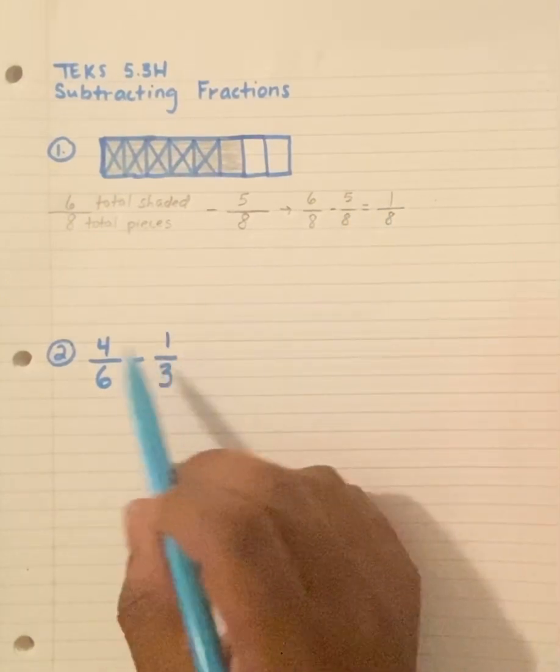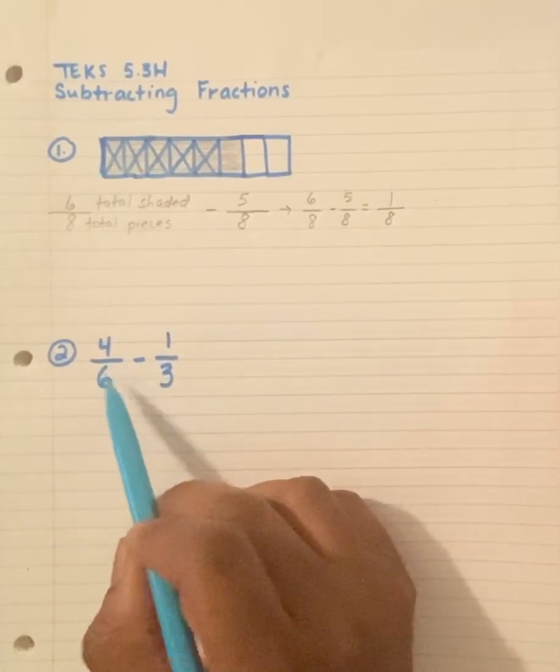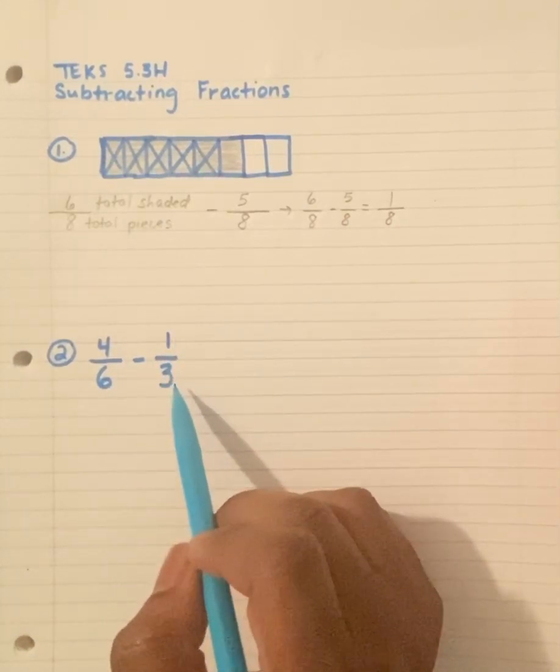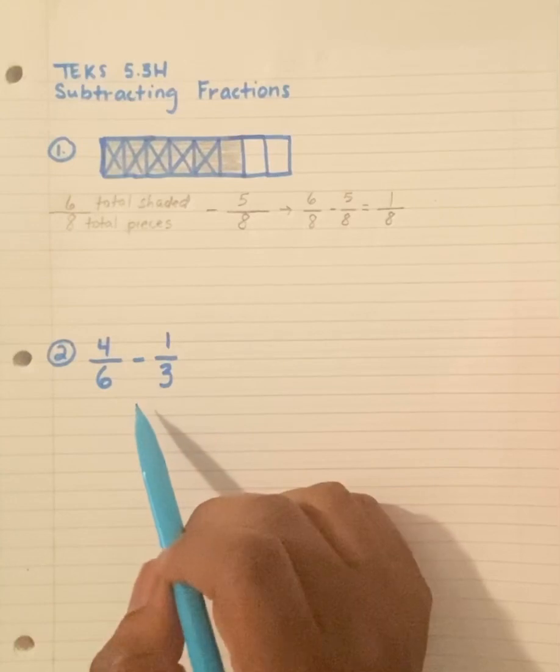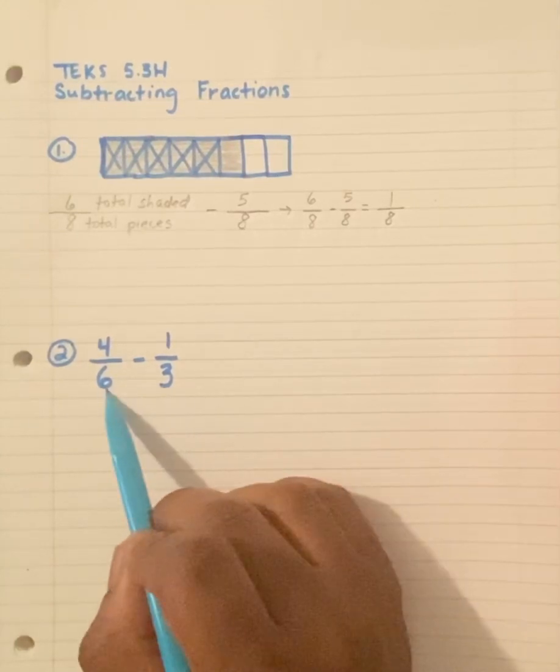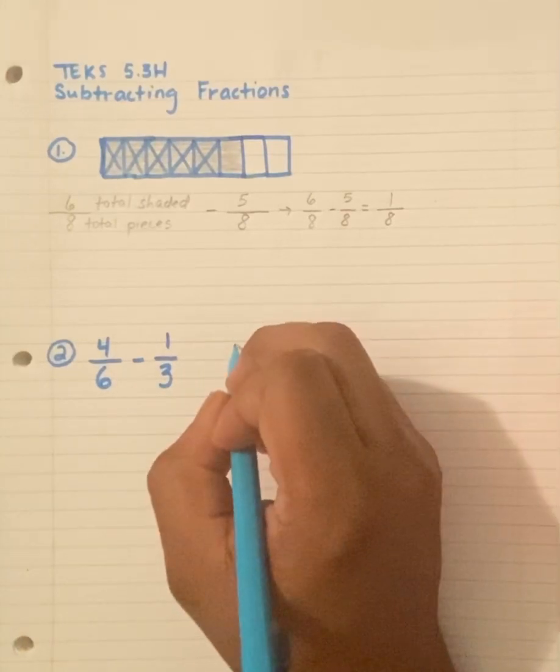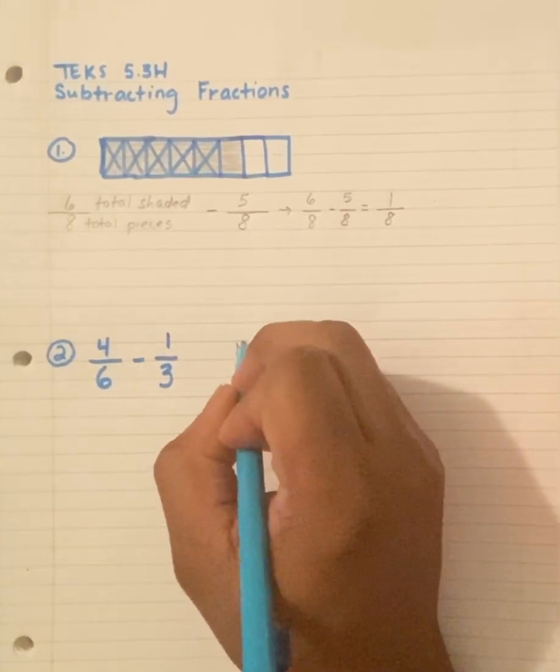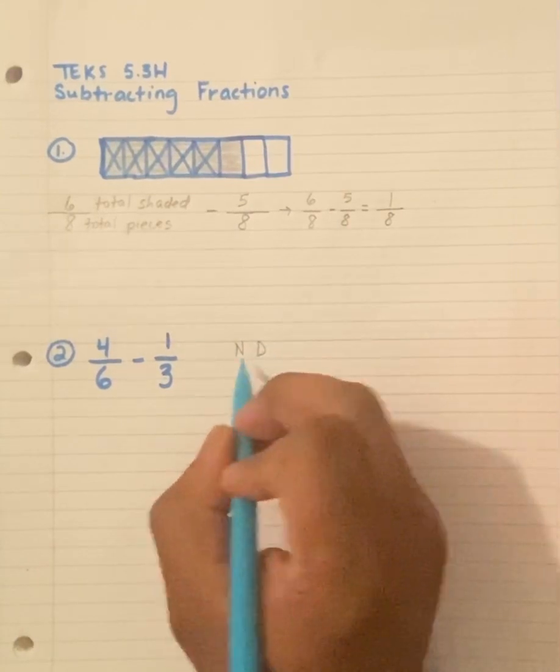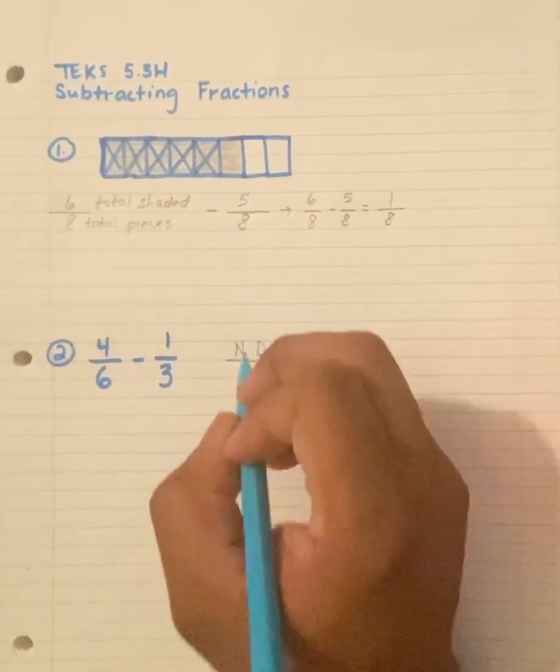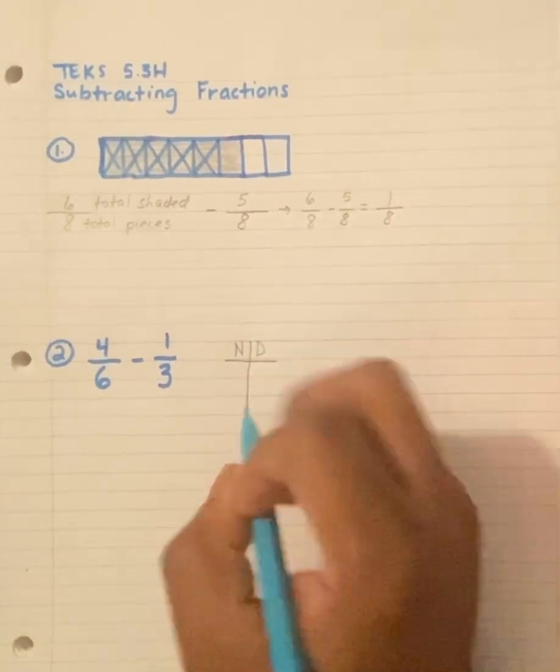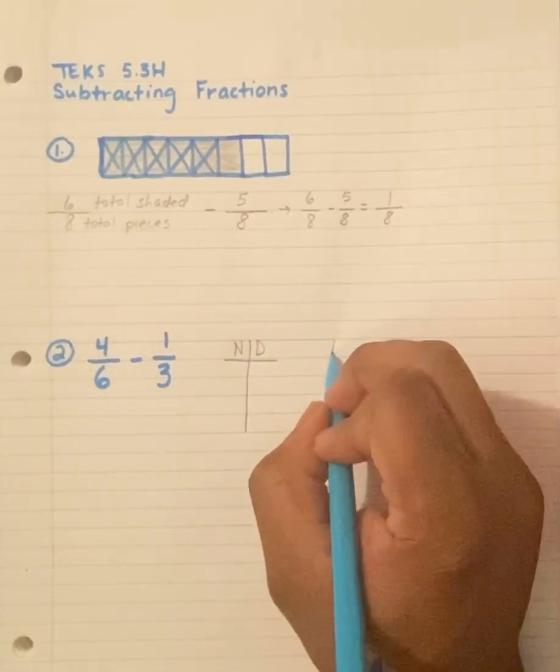Now, this question here, 4 over 6 minus 1 over 3 or one third. How do I subtract fractions that do not have the same denominator? We call using the ND chart or numerator denominator chart to figure out the common denominator. So I'm going to make two ND charts.